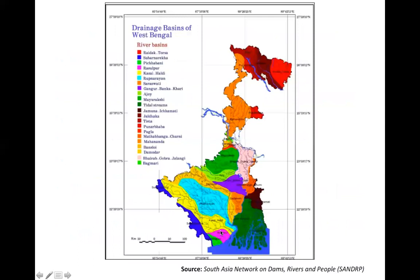From this drainage basin map of West Bengal, you can see that the major part of the state is flat plains of different rivers. As a result, the state has very nutrient-rich soil. Paddy is the main crop, and three to four croppings per year are not uncommon.